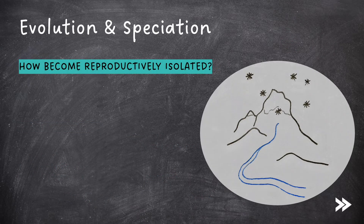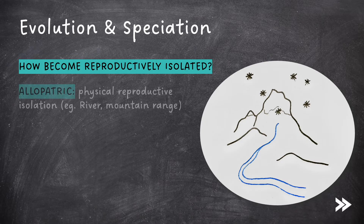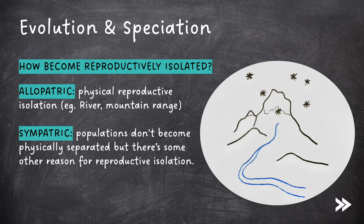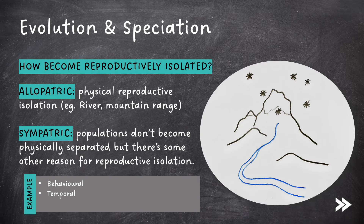So how could reproductive isolation occur? There are two types of speciation that we need to know about: allopatric and sympatric speciation. In allopatric speciation, we have physical reproductive isolation — for example, when species become separated by a river or a mountain range. Sympatric speciation is when populations don't become physically separated, but there is some other reason for reproductive isolation. This reason may be behavioural, temporal — for example, some individuals in a population of plants may begin flowering at a different time of year to the rest — or mechanical, such as a change in the genital structure, meaning that reproduction is no longer possible between the two species.